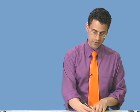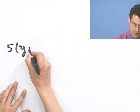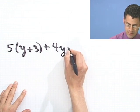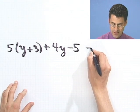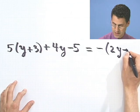Let's try another one, just for grins here. How about 5 times (y plus 3) plus 4y minus 5 equals negative 2y minus 4. Well, there's a lot of stuff here. And again, the theme always is to find y.